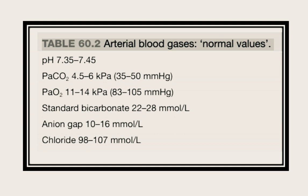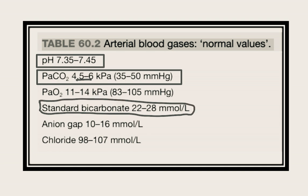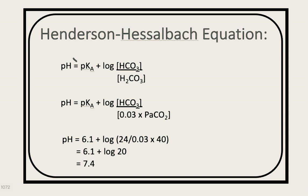The pH normal range is 7.35 to 7.45. The partial pressure of carbon dioxide is 4.5 to 6 kilopascals, and the standard bicarbonate level is 22 to 28 millimoles per liter. These three parameters are most important for reading an ABG. Other parameters include partial pressure of oxygen (11 to 14), anion gap (10 to 16), and chloride (98 to 107). The key equation is: pH equals bicarbonate divided by partial pressure of carbon dioxide.